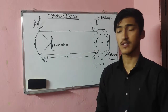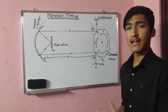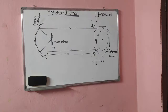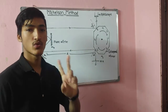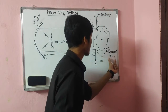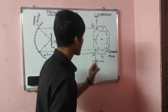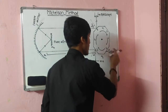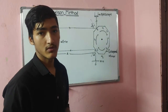Now let us discuss how he performed his experiment and calculated the speed of light. Michelson performed his experiment in two ways: first by keeping the octagonal mirror in a stationary position, and second by rotating the octagonal mirror with the help of an electric motor.